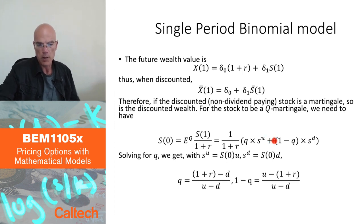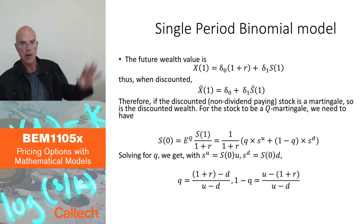All right, let's use the Cox-Ross-Rubinstein model. So instead of SU, write S of zero times U. Instead of SD, write S of zero times D. And solve for Q. This is an equation. The unknown thing here is Q. I know S zero and I know my model. Let's compute Q. So using the left-hand side equal to this right-hand side, if you compute Q, you get a formula. Q is 1 plus R minus D over U minus D. And 1 minus Q is U minus 1 plus R over U minus D. These are my pricing probabilities for up and down move.